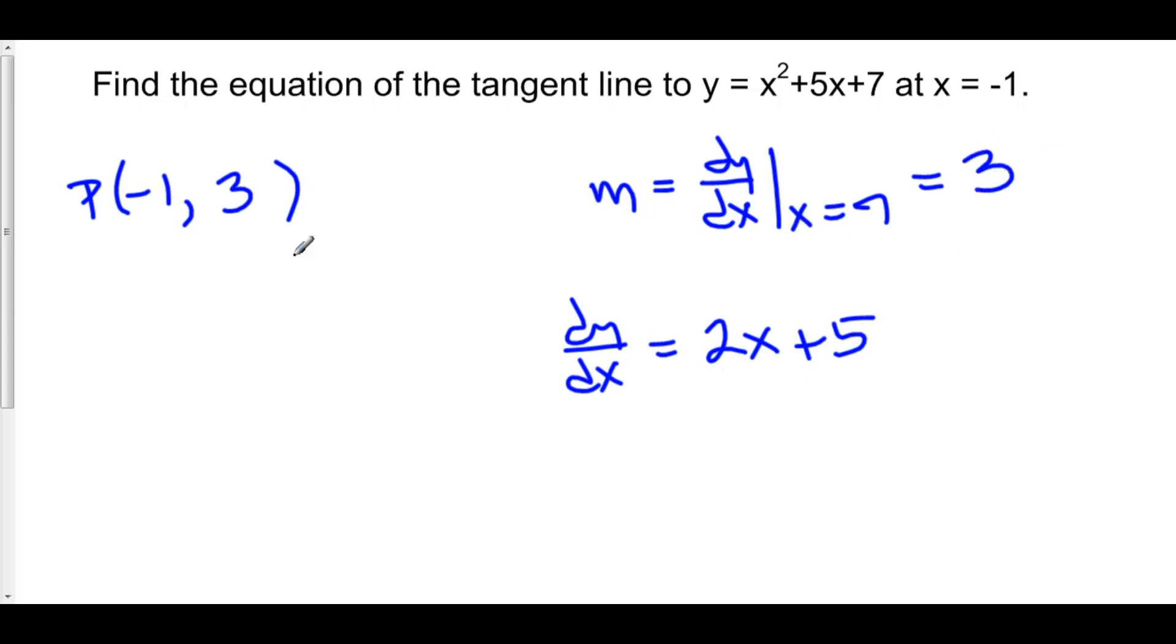So our point is negative 1, 3. Our slope is 3, because that is the derivative at x equals negative 1. We can now use point-slope form.